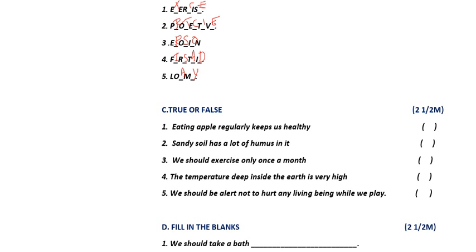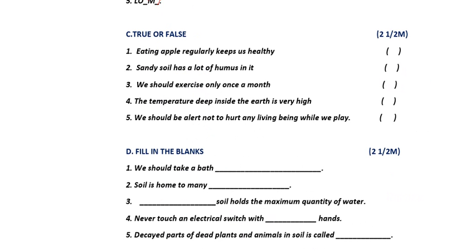Now moving to true or false. Each question carries half a mark. First question: eating an apple regularly keeps us healthy. Yes, absolutely — if you eat an apple regularly, you will be healthy. So the answer is true. I am writing T for true and F for false.